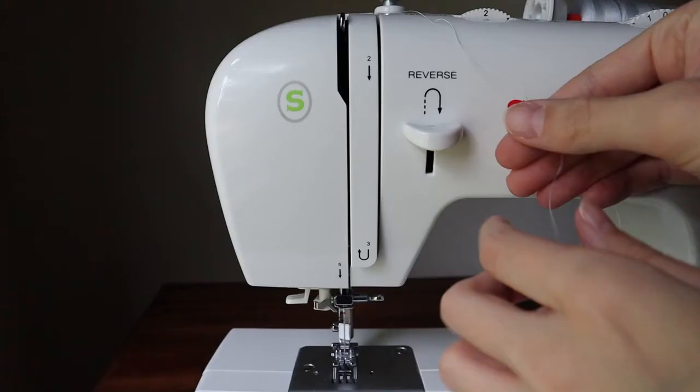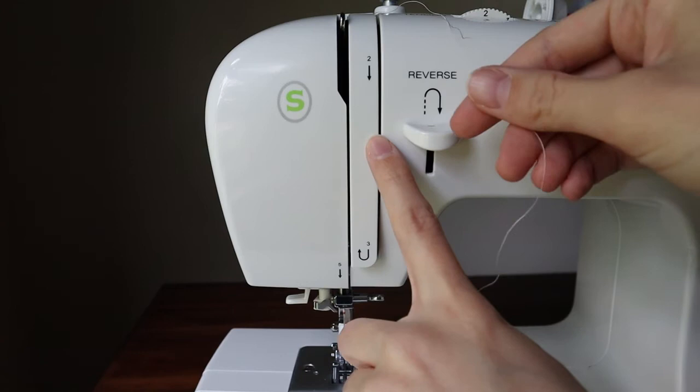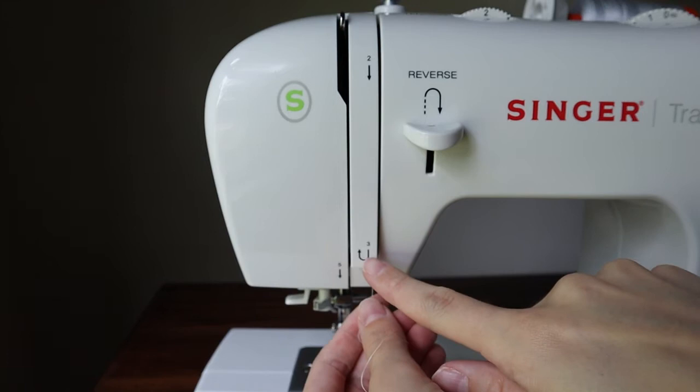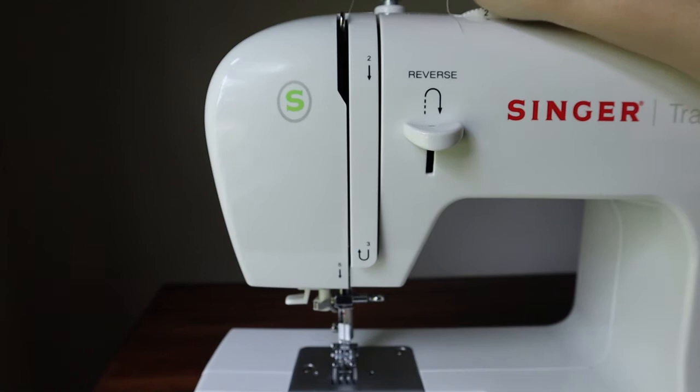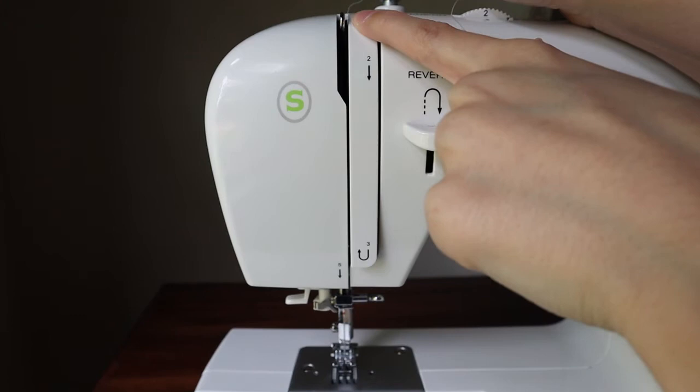Now we can see step two is right here. It says to put your thread through this slot here and then step three you're going to pull your thread up this slot here and then step four is putting your thread through this metal slotted hook.